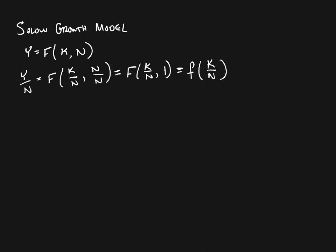So here we have our production function. Now there are only two other parts to the Solow model. The production function tells us that output in the economy — the standard of living — is dependent upon the amount of capital that workers have available to them, the amount of capital per worker. So the question is: what determines capital per worker? Well, steady-state capital per worker — that is, equilibrium capital per worker — is really going to depend on two things.